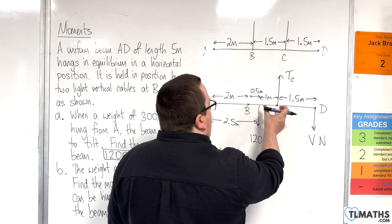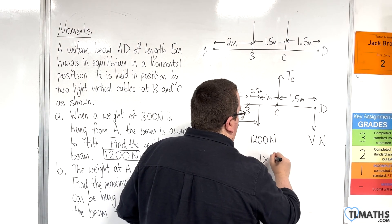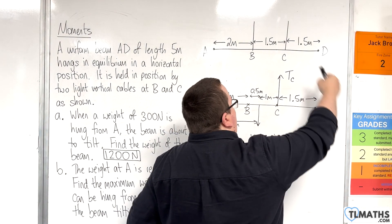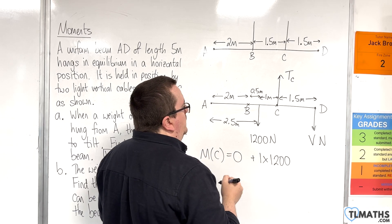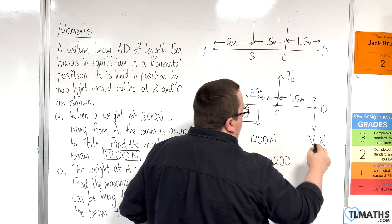then we can look at 1 metre away from the 1200 newton force, so 1 times 1200. And that's going round in an anti-clockwise motion, and so that's positive.